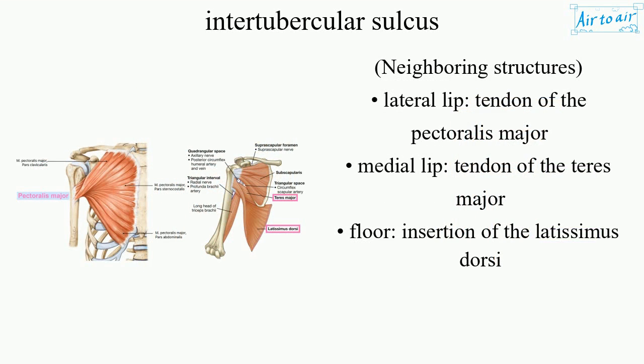Neighboring structures: lateral lip — tendon of the pectoralis major; medial lip — tendon of the teres major; floor — insertion of the latissimus dorsi.